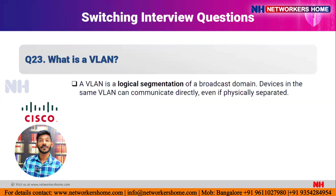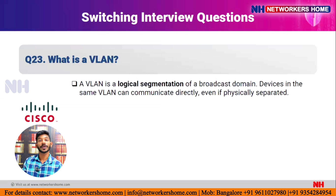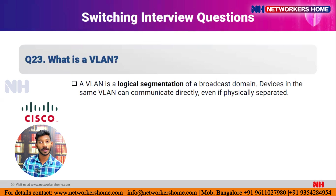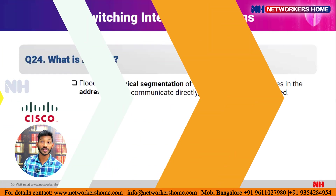Question twenty-two: what is a VLAN? A VLAN (Virtual Local Area Network) is a logical segmentation of a broadcast domain. Devices in the same VLAN can communicate directly even if physically separated. For example, in a LAN with 10 PCs, you can assign five to VLAN 10 and five to VLAN 20, dividing one physical LAN into multiple virtual LANs. Devices in different VLANs cannot communicate without inter-VLAN routing.